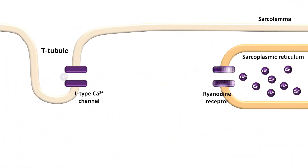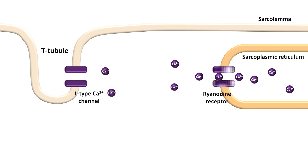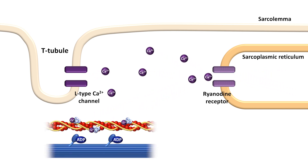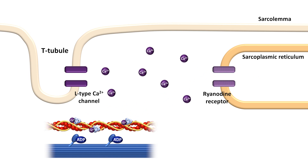So how does the action potential — the excitation — trigger the rapid cycling of actin-myosin cross-bridging, the contraction? When the action potential triggers the release of calcium from the sarcoplasmic reticulum, this calcium binds to troponin C, which is what causes tropomyosin to shift, unblocking actin's myosin-binding site.